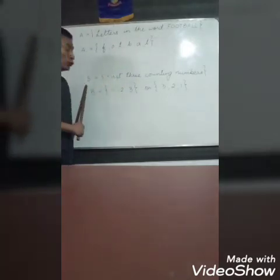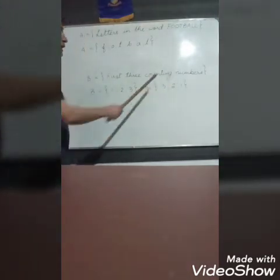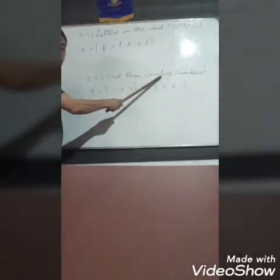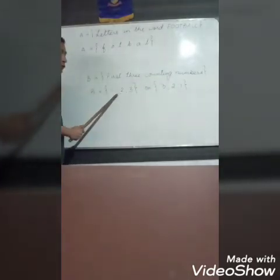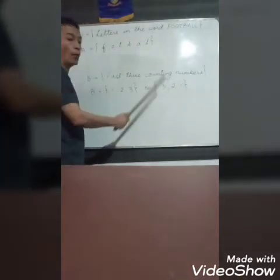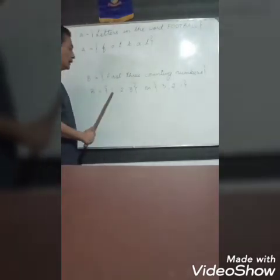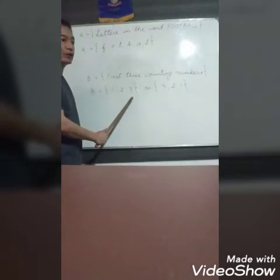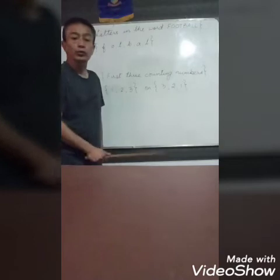Let's take example two. We've got the first three counting numbers — this is the descriptive form, and this here is the roster form. When we write down the roster form, the first three counting numbers will be 1, 2, and 3. I have also written it as 3, 2, 1 — in other words, I have jumbled up the numbers. So it does not have to be in a systematic order.